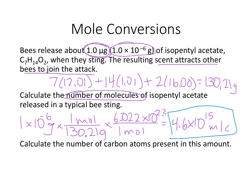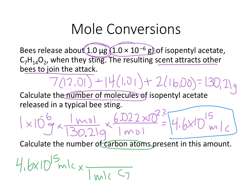How many carbon atoms are present in this amount? If we have 4.6 times 10 to the 15 molecules, and every one molecule of C7H14O2 has 7 atoms of carbon in it, we take 4.6 times 10 to the 15 and multiply by 7, giving 3.2 times 10 to the 16 atoms of carbon in every single bee sting.